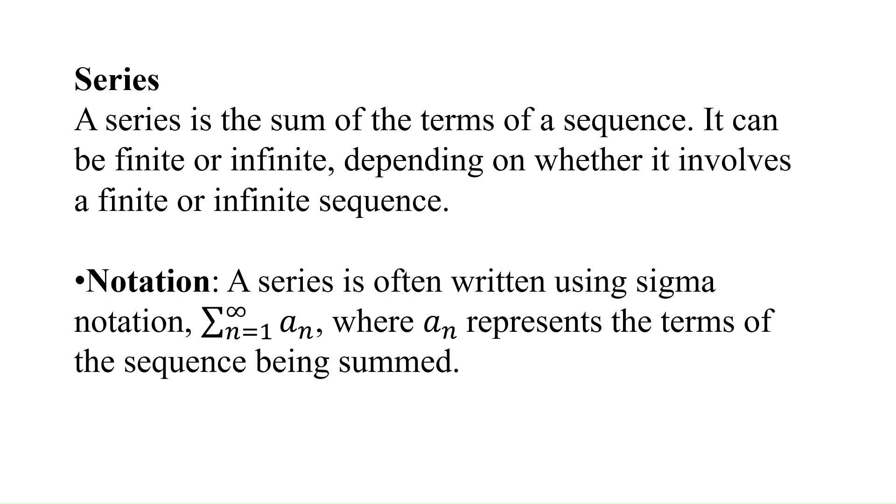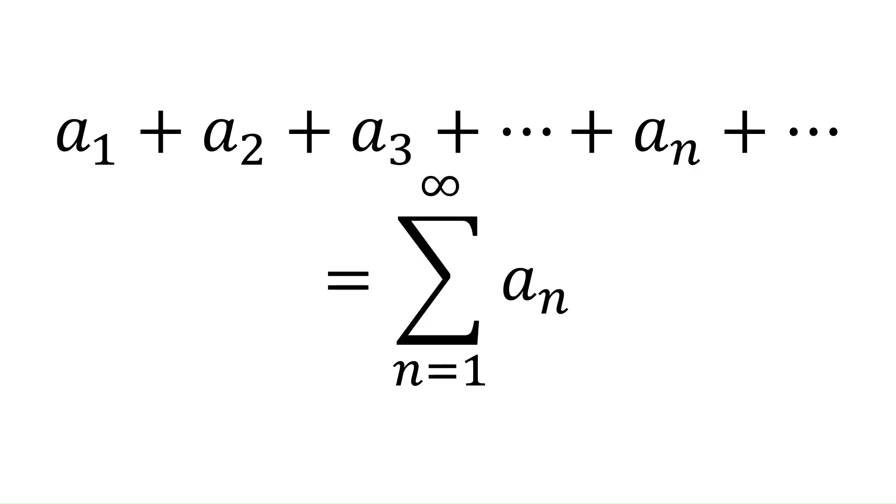A series is the sum of the terms of a sequence. It can be finite or infinite, depending on whether it involves a finite or infinite sequence. A series is often written using sigma notation, Σ(n=1 to ∞) a_n, where a_n represents the terms of the sequence being summed.